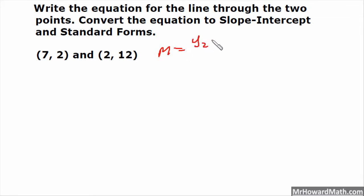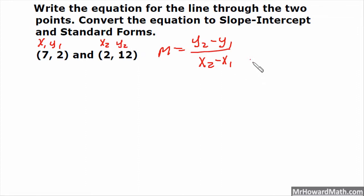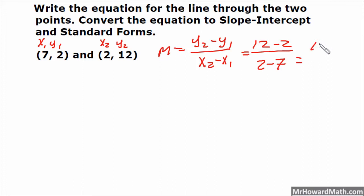So my slope formula, m equals y2 minus y1 over x2 minus x1, is what we will use. This would be x1, y1, x2, y2. So fill that in: y2 is 12, minus y1 which is 2, over x2 which is 2, minus x1 which is 7. So 12 minus 2 is 10, 2 minus 7 is negative 5, 10 divided by negative 5 is negative 2. So my slope is negative 2.